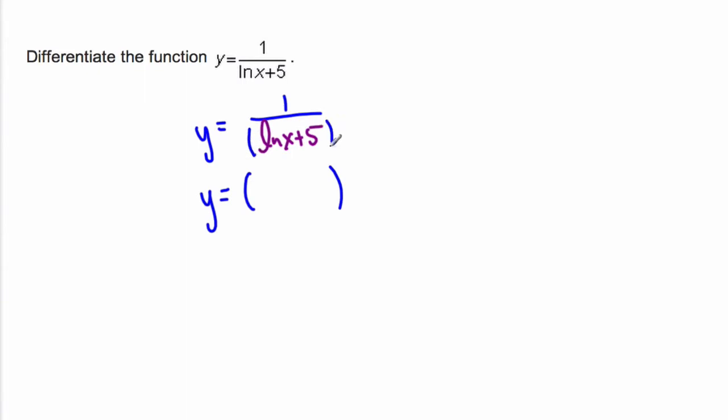We'll bring this whole thing here. This is to the 1 power, we'll bring it up to the minus 1, and then you'll see that we can use the power rule. So here's our outside function, which is something to the minus 1, and the inside function is ln x plus 5.